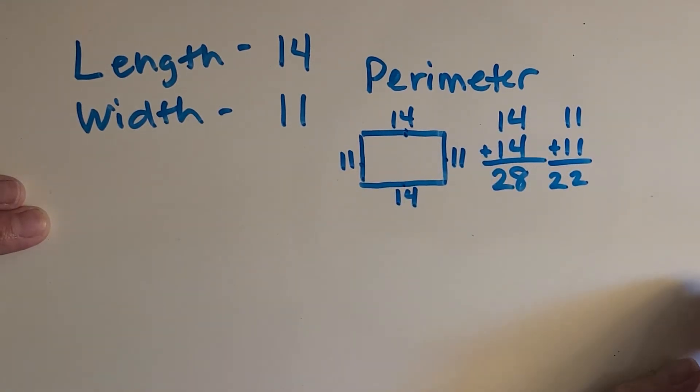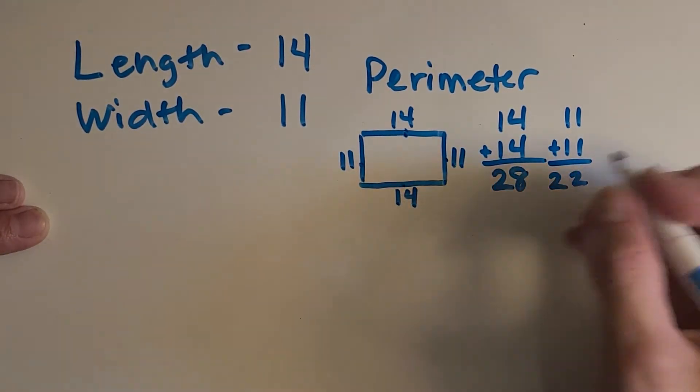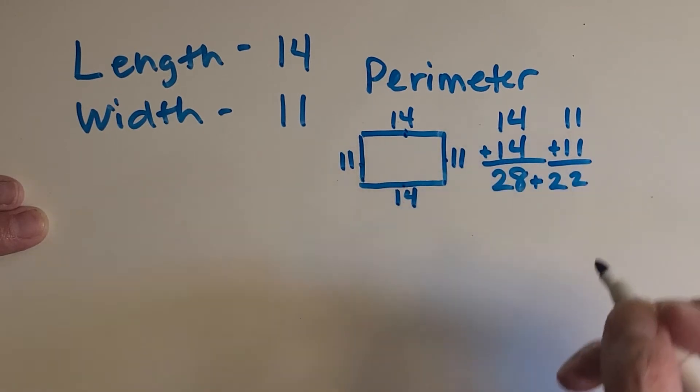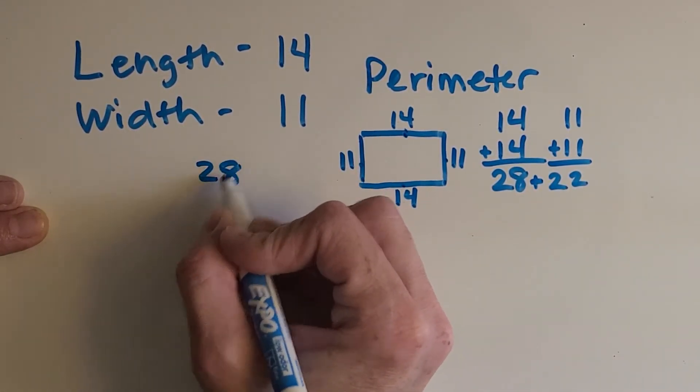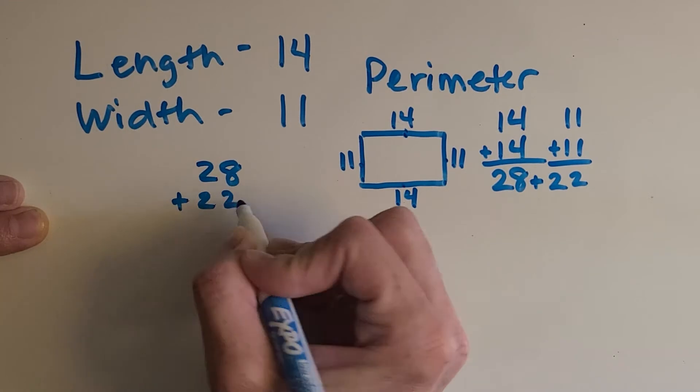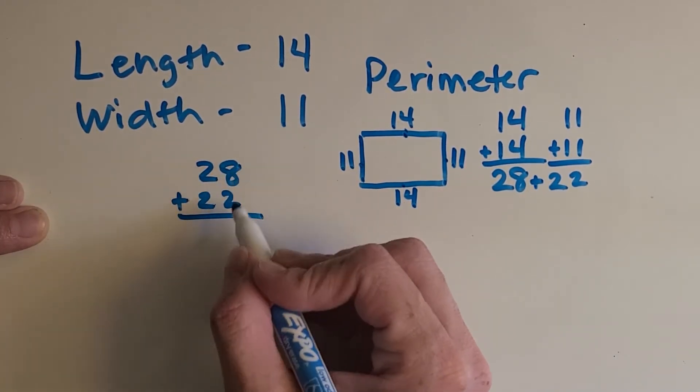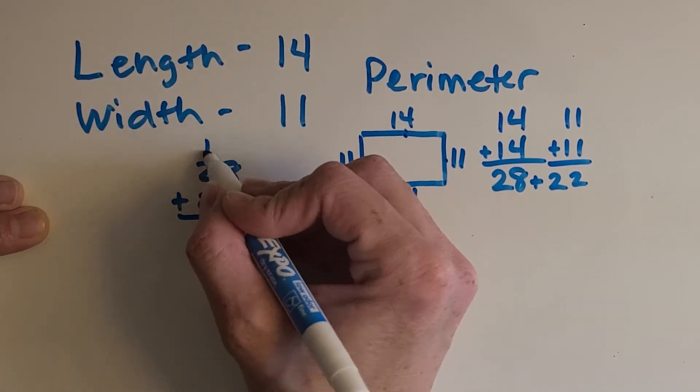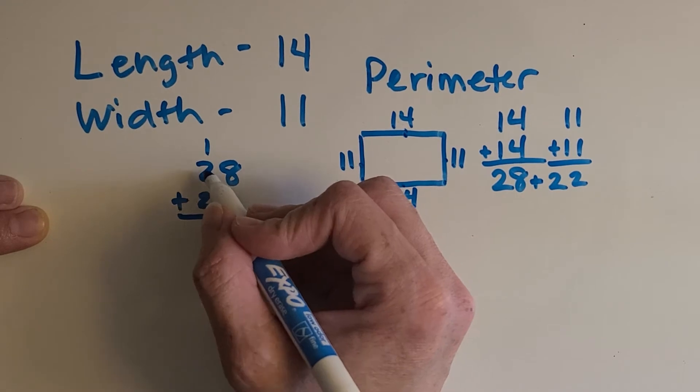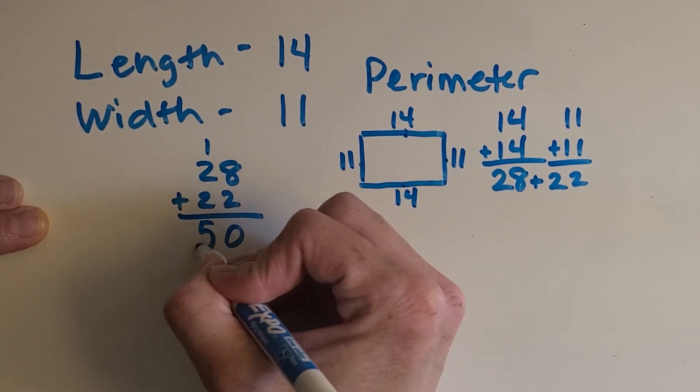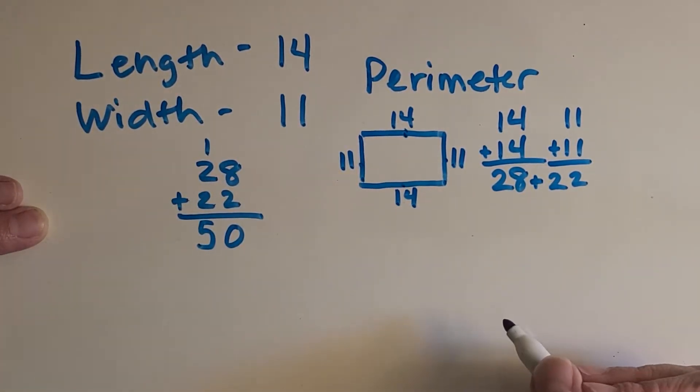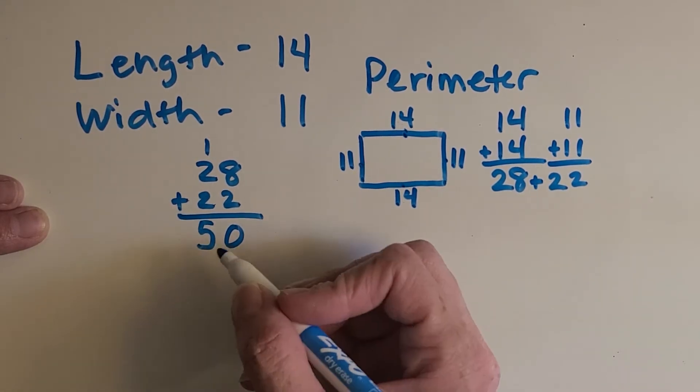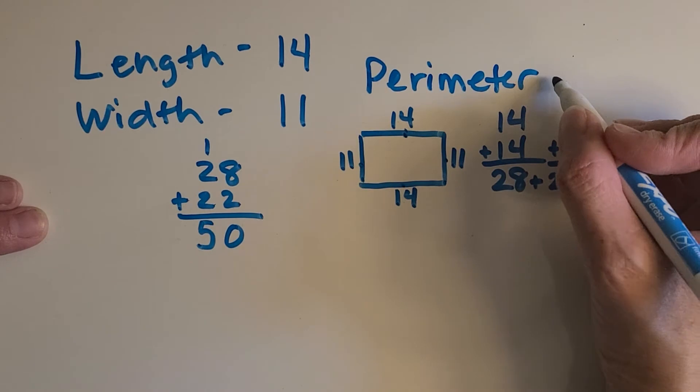Now what should I do? Okay, great. I got to add those two amounts. Okay, I'm going to do that over here. 28 plus 22. 8 plus 2 is 10. 2 plus 2 is 4. Plus the 1 is 5. So the distance all the way around the camel enclosure is 50 blocks. So I'm going to put that up here.